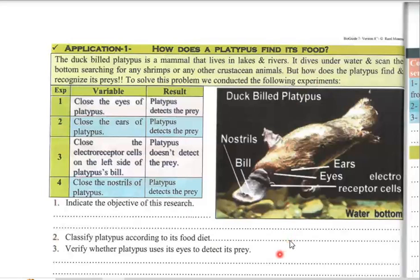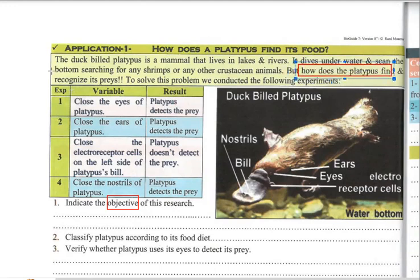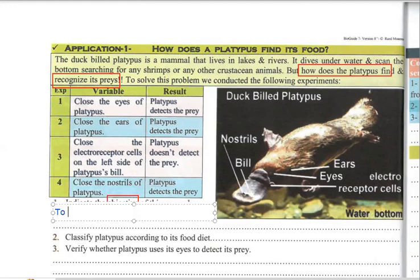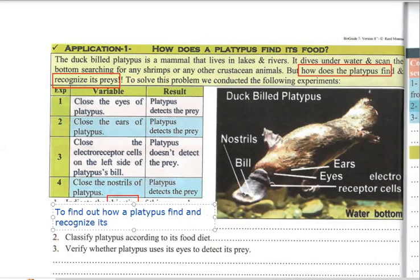To solve this problem, we conducted the following experiment. We have an aim — an objective. What is the objective? It is to solve the problem. The problem is: how does the platypus find and recognize its prey? If the question asks for the problem, you simply copy out the question. But here they are asking for the objective of the research — what we are trying to find out. We are trying to find out how a platypus finds and recognizes its prey.